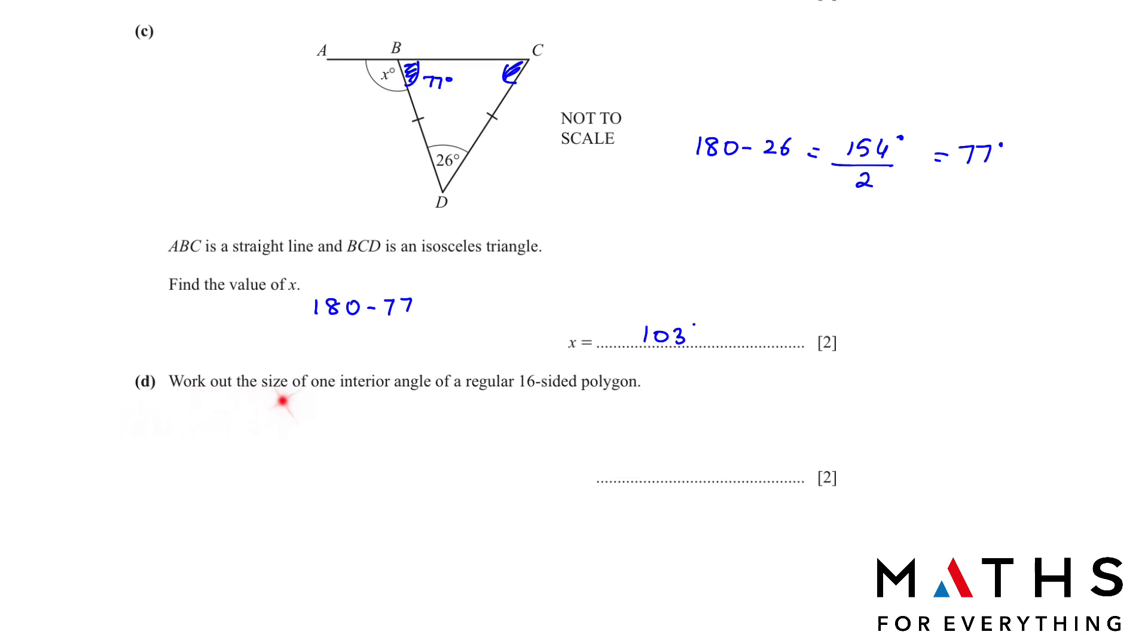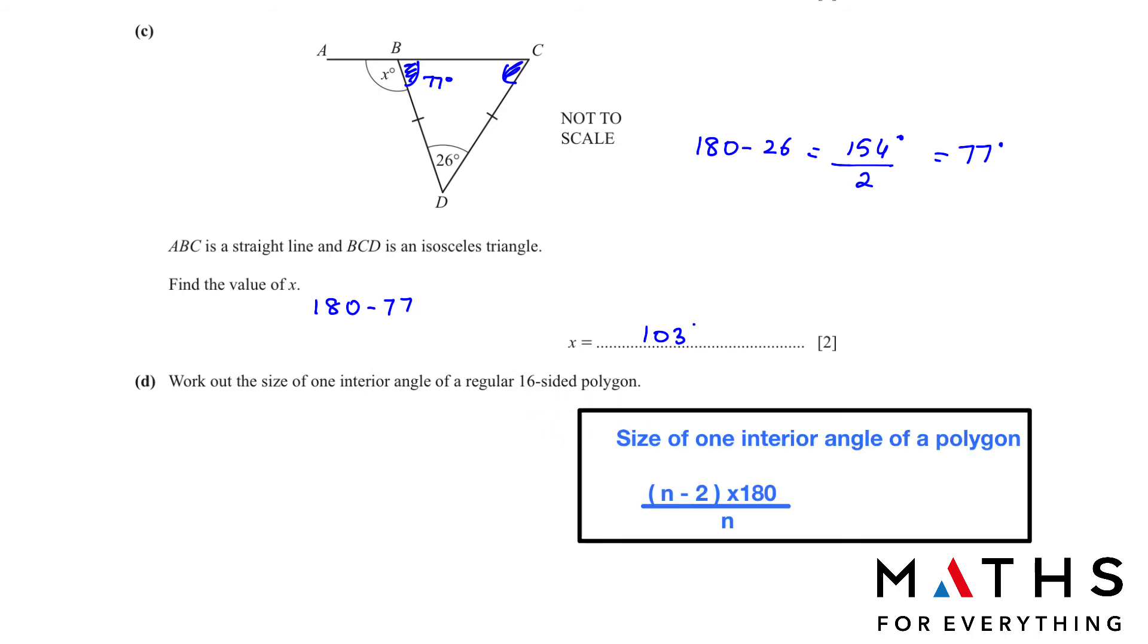Solving part D, work out the size of one interior angle of a regular 16-sided polygon. We can use this formula: size of one interior angle of a polygon is equal to n minus 2, n is the number of sides, multiply by 180 divided by n. So one interior angle will be 16 minus 2 multiply by 180 divided by 16. This will give us 157.5. There is another way also to solve it, but that's a bit longer. Here you need to just memorize the formula. Write down the formulas all in one place so you can always refer to them.